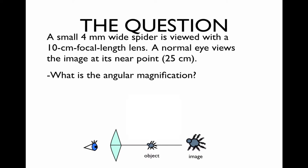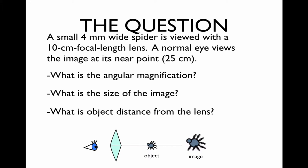We'd like to know what is the angular magnification of the spider? What is the size of the image, given that we know the size of the spider? And what is the object distance from the lens?